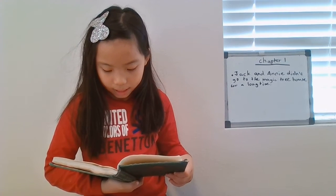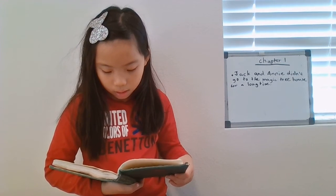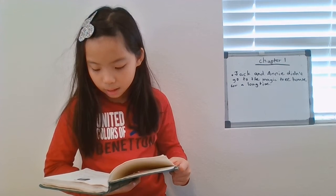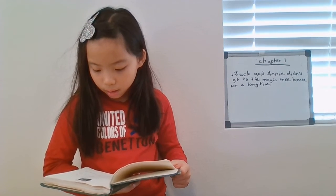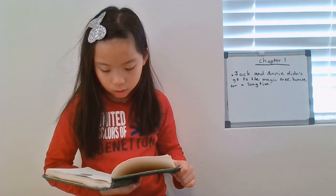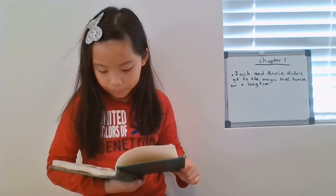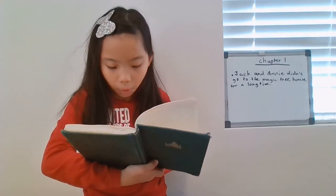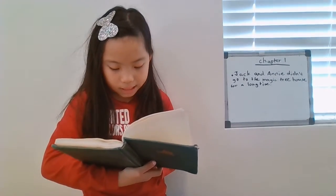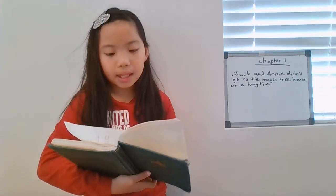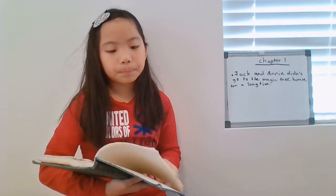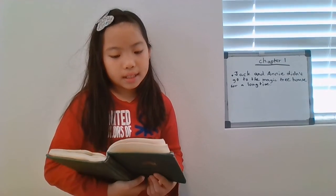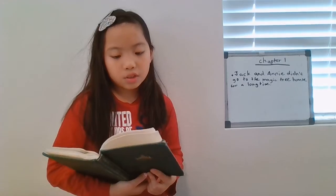Wait, said Annie. Look — she pointed to a white bird sitting on a bare tree branch at the edge of the wood. The bird was staring straight at them. It's a dove, said Jack.